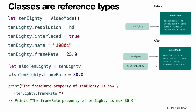Classes are reference types. Unlike value types, reference types are not copied when they are assigned to a variable or constant or when they are passed to a function. Rather than a copy, a reference to the same existing instance is used. Using the VideoMode class, a constant called tenEighty is set to a new VideoMode instance assigned a resolution of 1920 by 1080, set to be interlaced, named '1080i', with a frame rate of 25 frames per second. Then tenEighty is assigned to a new constant called alsoTenEighty, and the frame rate of alsoTenEighty is modified. Because classes are reference types, tenEighty and alsoTenEighty both refer to the same VideoMode instance — they are just two different names for the same single instance.